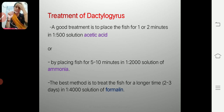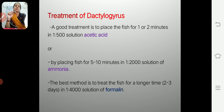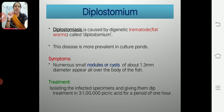To treat Dactylogyrus, we can use acetic acid in the proportion of 1:500 for one to two minutes, or formalin in the proportion of 1:4000, which is also effective in the treatment of Dactylogyrus.